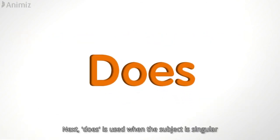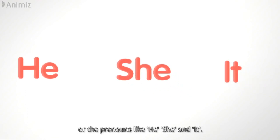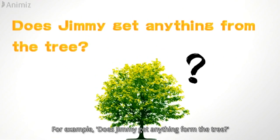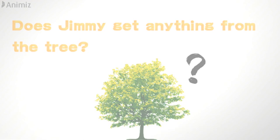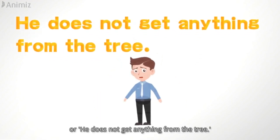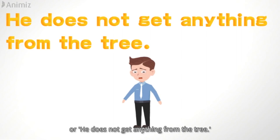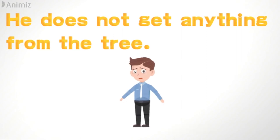'Does' is used when the subject is singular or the pronouns like he, she, and it. For example: does Jimmy get anything from the tree? Or: he does not get anything from the tree.